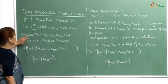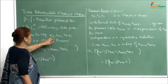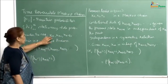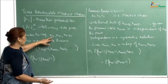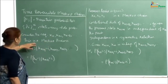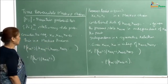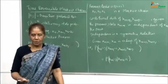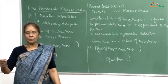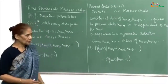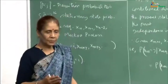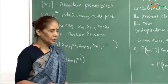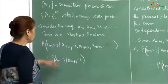Now consider the sequence in reverse order: x_n, x_{n-1}, x_{n-2}, and so on. At this point you are looking backwards at the process. We will show that this is also a Markov process. When a Markov process is going on and you at some point want to look backwards and see the transitions, the sequence will also have the Markov property and so it will also be a Markov chain.